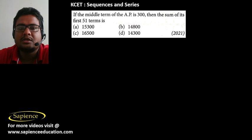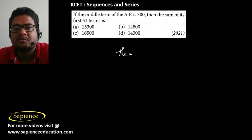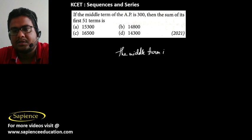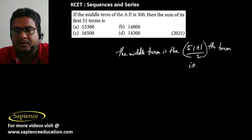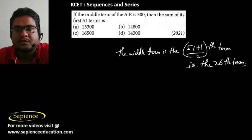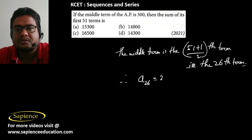Here it is told that the middle term of an AP with 51 terms is 300, and we need to find the sum of its first 51 terms. For 51 terms, the middle term is the (51+1)/2 = 26th term. So a₂₆ = 300.